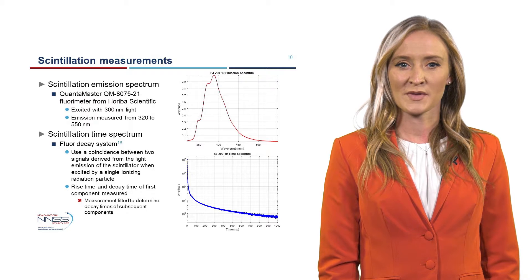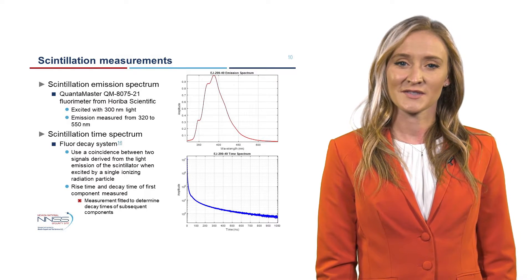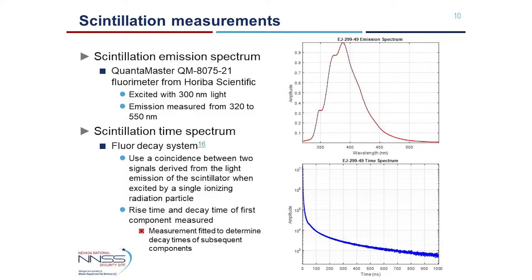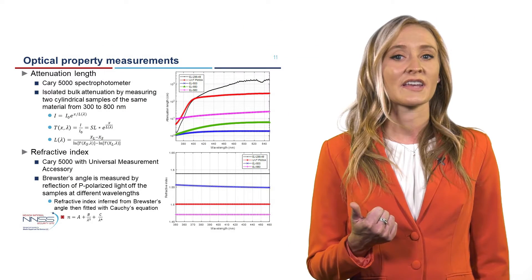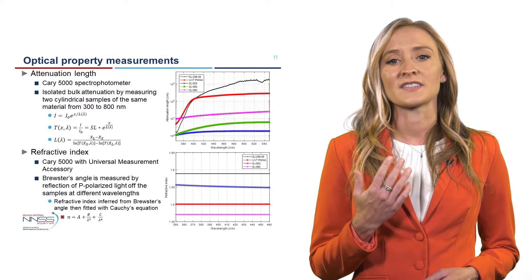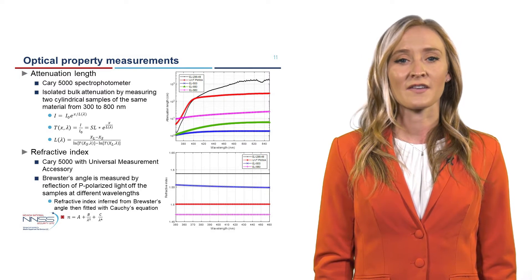The material and optical property measurements used as input in our Geant4 simulations were acquired using various methods. The EJ-299-49 scintillation emission spectrum was measured using a Quantamaster QM8075 fluorimeter from Horiba Scientific. The plot of the scintillation emission spectrum as a function of wavelength shows a peak emission at a wavelength of approximately 390 nanometers. The EJ-299-49 scintillation time spectrum was measured using a fluorescence decay system, and the measured time spectrum was fitted using four components to determine the decay times and relative amplitudes of each individual scintillation component.